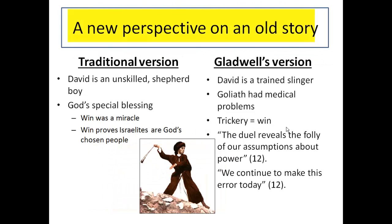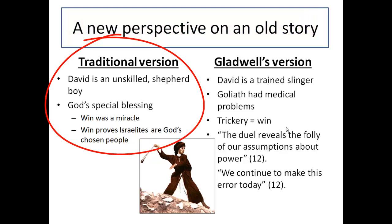The book David and Goliath brings a new perspective on an old story. The traditional version begins in the introduction chapter, where the author discusses David and presents him as an unskilled shepherd boy. Traditionally, David was seen as someone who received God's blessing. The win between David and Goliath is presented as a miracle, proving that the Israelites are God's chosen people.